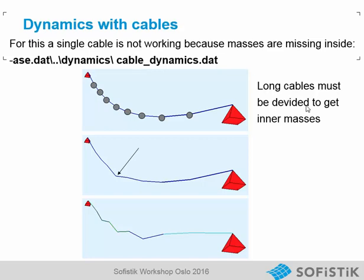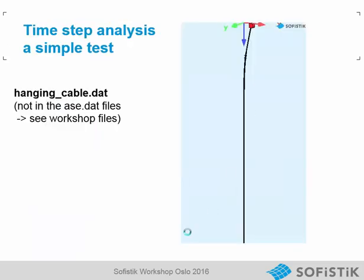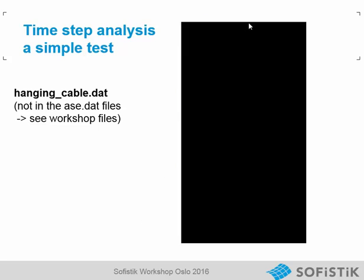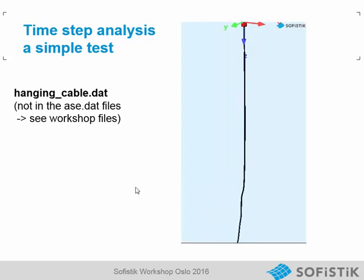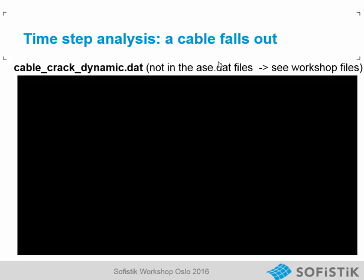There is a nice example called cable dynamics. If we calculate eigenfrequencies on a cable — in the example cableeigenfrequencies in the geometric nonlinear folder — we can start with a primary load case. The primary load case is a cable with deformation, and if we compute eigenfrequencies on this primary load case, we can get the first eigenfrequencies swinging in the horizontal direction in the deformed shape. In the time step analysis we can use cables as well, but we have to divide them. We see a deformation on the top and then a wave going down. Another example shows a cable that is cut in the analysis, and we see the nonlinear effect of this.